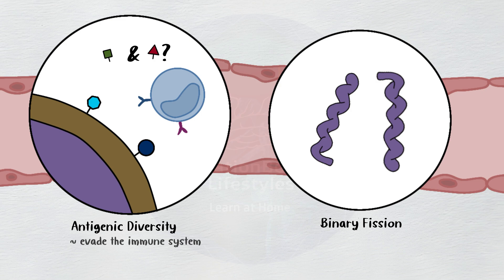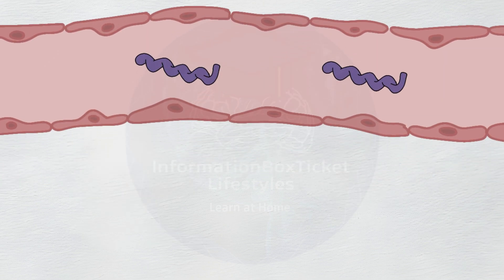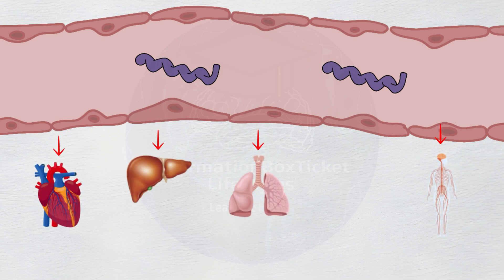But the term binary fission is used to describe division of prokaryotic cells, which don't have a nucleus, and therefore some steps in replication are different from mitosis. Once they multiplied sufficiently, they moved from the bloodstream to the central nervous system, liver, heart, lungs, and bone marrow.